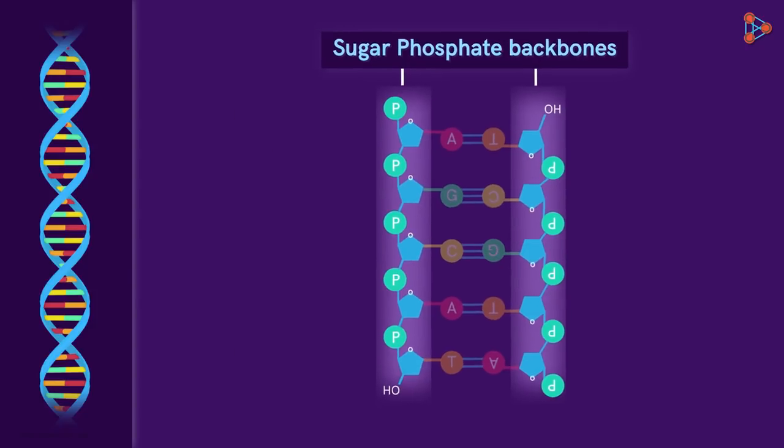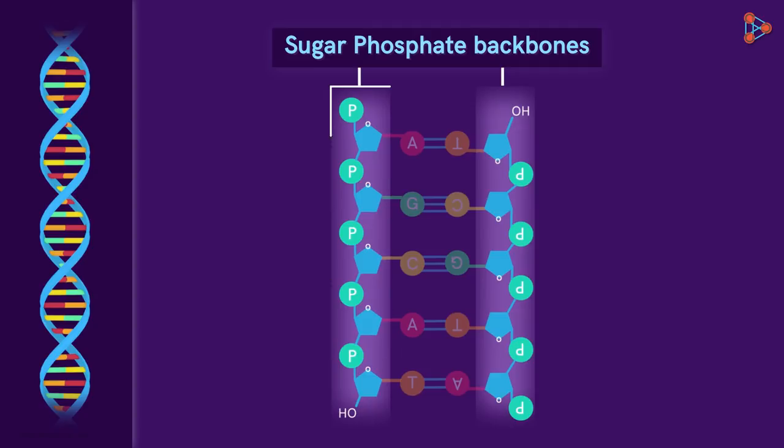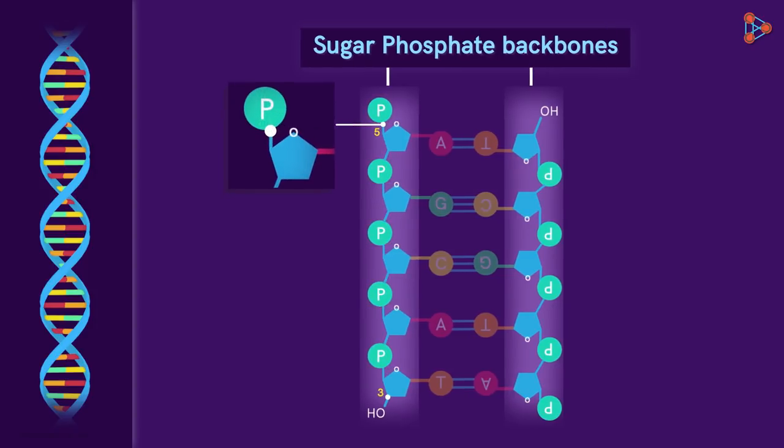This is how the phosphate groups link the sugar molecules together at the fifth and the third carbon atoms. So, for a layman, the strand would look like this: a phosphate group, fifth carbon atom, third carbon atom, phosphate group, fifth carbon atom, third carbon atom, and so on. So, the fifth carbon atom to which the phosphate group is attached is called 5' carbon, and the third carbon atom to which a free hydroxyl group is attached is called 3' carbon.